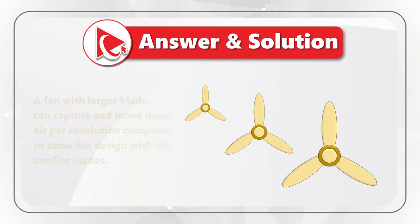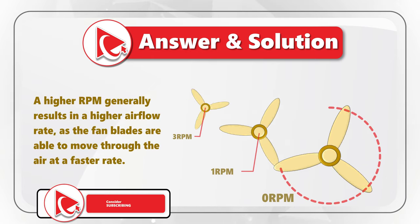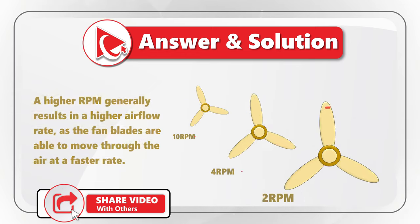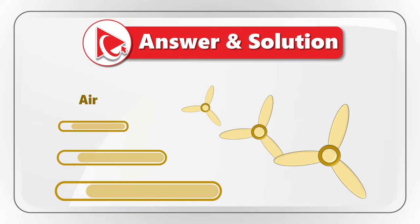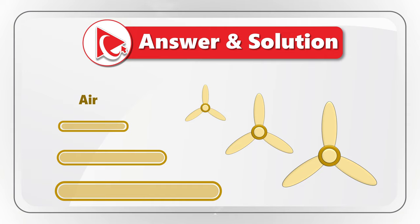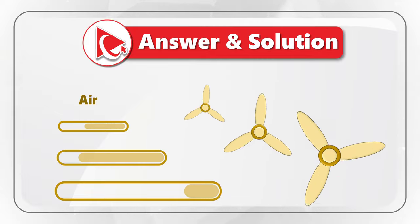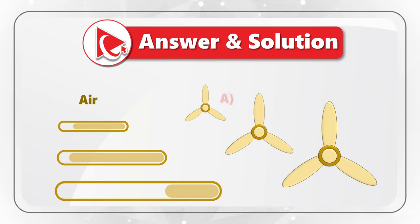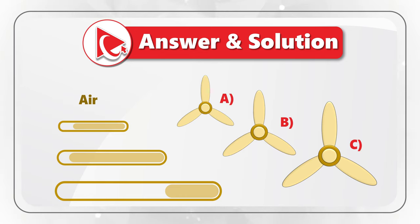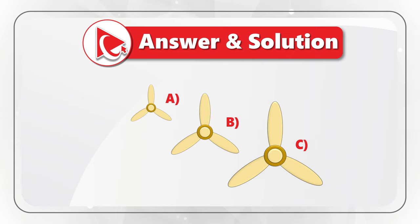There are two key factors to determine airflow rate: the size of the fan's blades, and the rotational speed measured in RPMs — revolutions per minute. A fan with larger blades can capture and move more air per revolution compared to the same fan design with smaller blades. The rotational speed also affects airflow; higher RPM generally results in a higher airflow rate. Since fans A, B, and C all have the same design but different sizes, the fan with the largest size will throw more air. This is why the correct answer is Choice C.